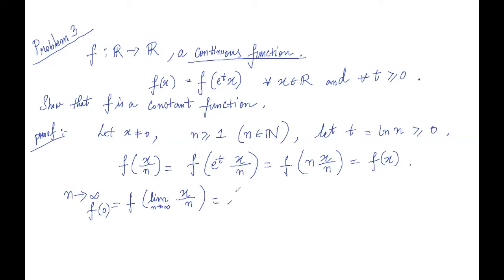We can take out the limit outside. And this becomes limit n tends to infinity f of x over n. And that is nothing but limit n tends to infinity f of x, and since this is independent of n, so this limit is equal to f of x.